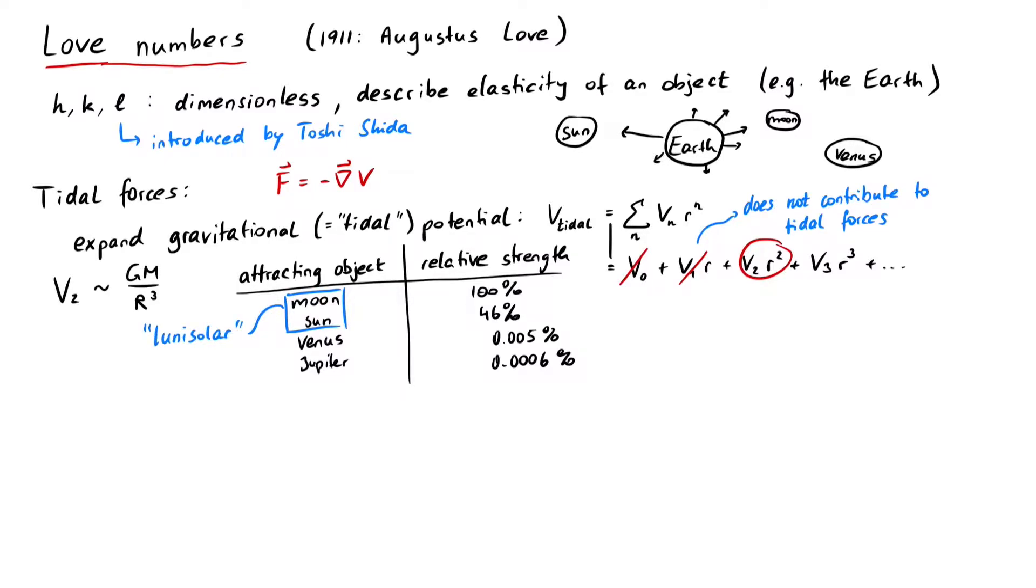Ok, back to the love numbers. Let's assume we know the tidal potential to all necessary orders up to n. Then this potential will have the following effects on our planet. The surface of the earth will be deformed in the vertical, i.e. radial direction, according to h_n times V over g. h_n is the love number for potential of order n, V is the tidal potential, and g is the earth's gravitational acceleration.